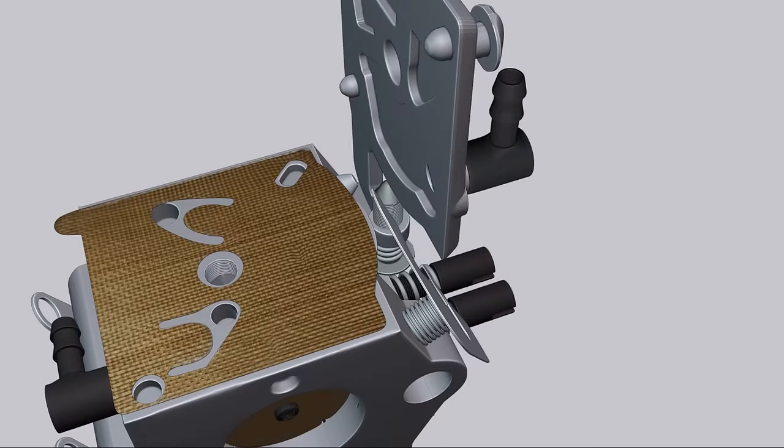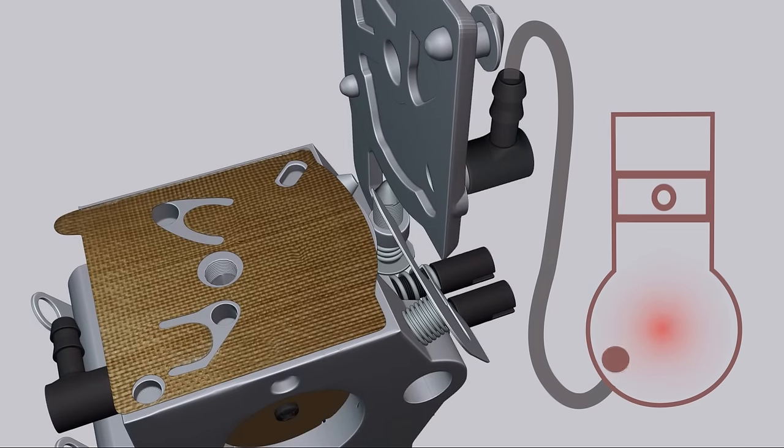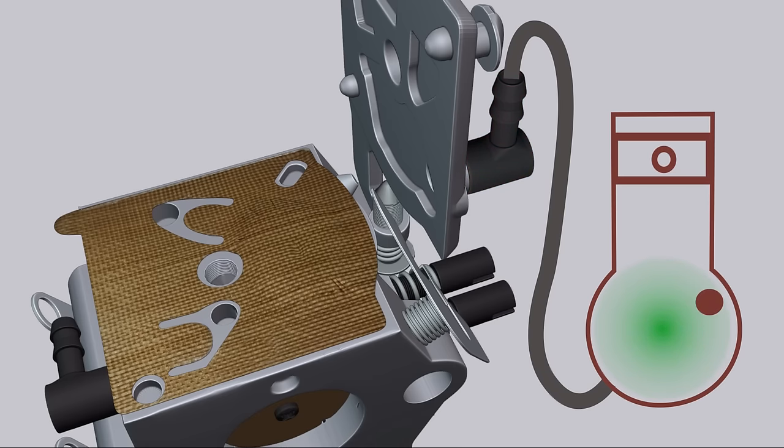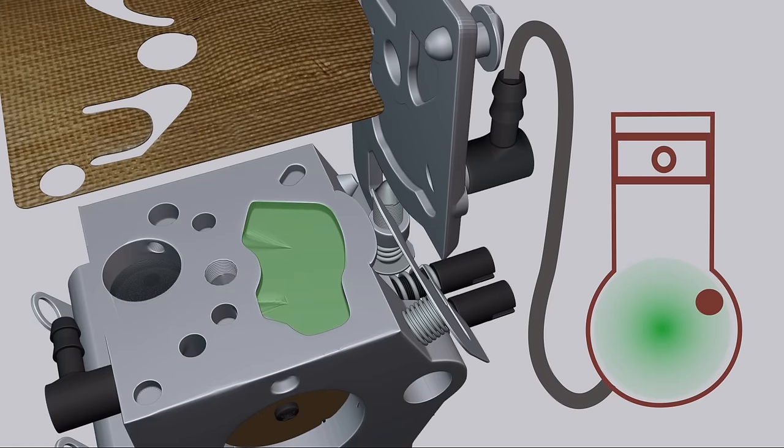When the engine piston moves up, a negative pressure is created in the crankcase vacuum. Through the fitting of the top cover of the carburetor, this vacuum acts on the membrane, the bypass chamber, bending it upwards. A vacuum is also created under the membrane.